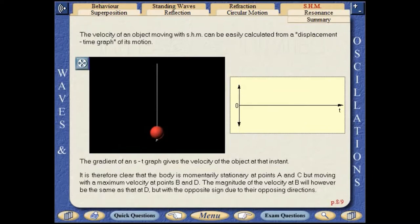The velocity of an object moving with simple harmonic motion can be easily calculated from a displacement time graph of its motion. The gradient of a displacement time graph gives the velocity of the object at that instant.